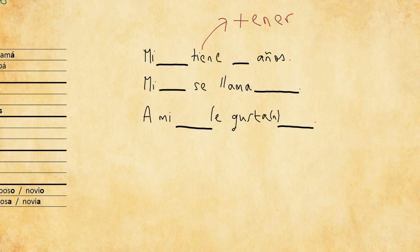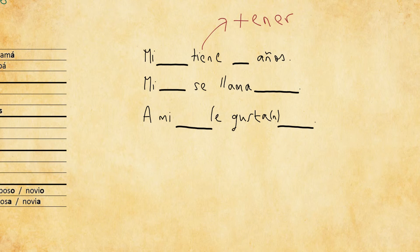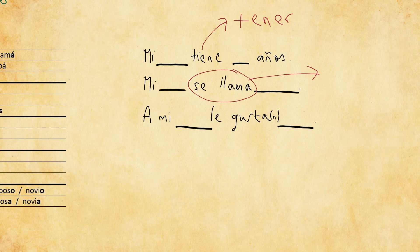The second sentence: for example, 'Mi madre se llama Michaela' — my mother's name is Michaela, or my mother is called Michaela. You can fill this in with any family member and any name. Notice this uses a reflexive verb — we have the reflexive part in the third form, which is 'se', and 'llama' is from 'llamar' or 'llamarse'.